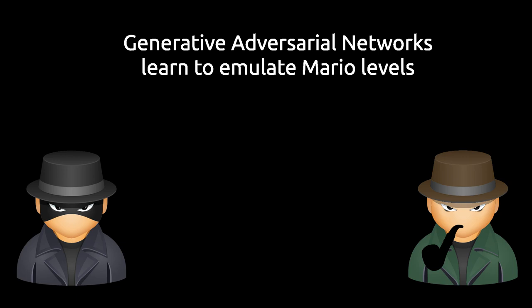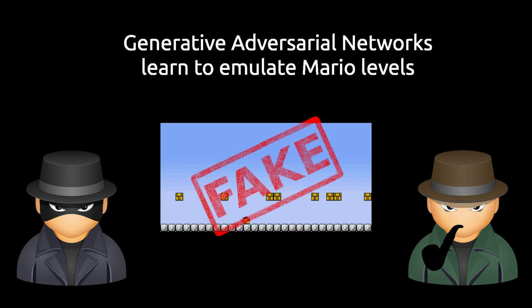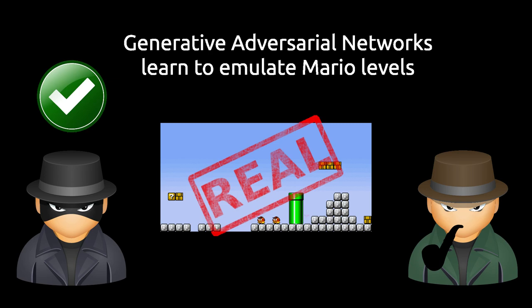Their training process can be described by the following fun little metaphor. Imagine the shady guy on the left is trying to forge Mario levels — this is obviously cause for a criminal investigation — so the detective on the right is trying to find evidence by identifying fake Mario levels. The shady guy presents a level, and the detective guesses whether it is fake or real. Both of them get feedback on whether the detective was right or not, so ideally over time both get increasingly better at their respective jobs.